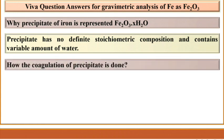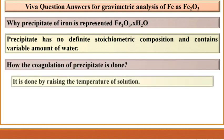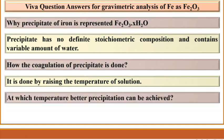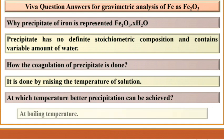How is the coagulation of the precipitate done? It is done by raising the temperature of the solution. At which temperature can better precipitation be achieved? At boiling temperature.